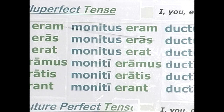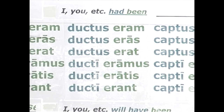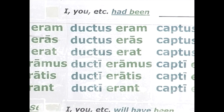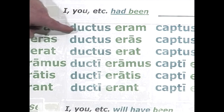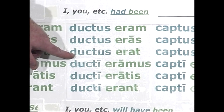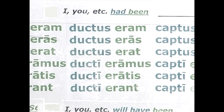Third conjugation follows the same pattern — no tricks to it. Simply fourth principal part plus the imperfect of sum: I had been led, you had been led, he had been led, we, you plural, they had been led. And the third io is the same, as is the fourth conjugation.